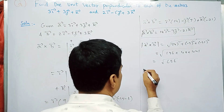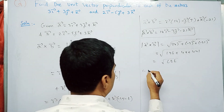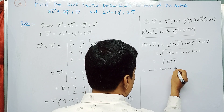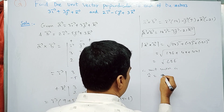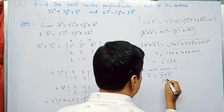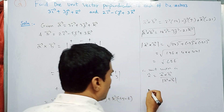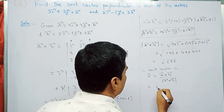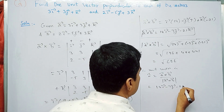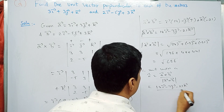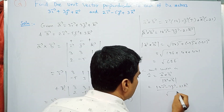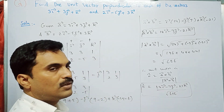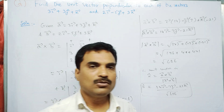Therefore, the unit vector n-cap = (a-bar cross b-bar) / |a-bar cross b-bar| = (14i - 7j - 21k) / √686. This is the unit vector perpendicular to the given two vectors.